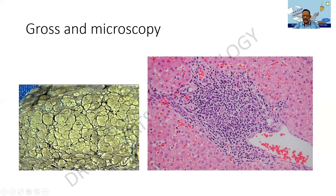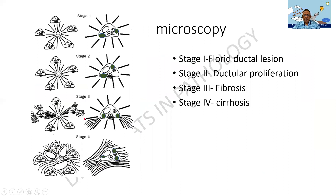I would like you to kindly draw this diagram. This is the central vein, the radiating cords of hepatocytes, and the bile triad found in three areas. In the initial stage there is a florid ductal lesion — around the duct you find a lot of inflammation. Then there is ductular proliferation with lines of proliferation and spurs of fibrosis, which start infiltrating into the surrounding parenchyma. Finally, there is destruction of hepatocytes, collapse, regeneration, and broad bands of fibrosis leading to cirrhosis.